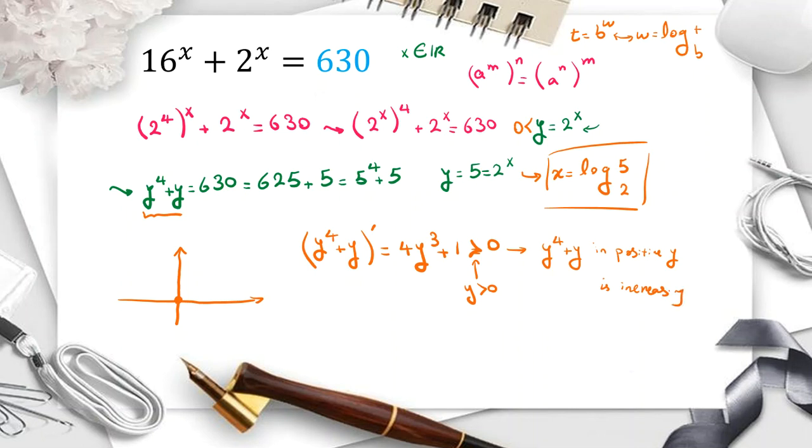So when a function is increasing, in 5 it is 630. So after y, it is greater than 630. Before y, it is less than 630. So our only answer for x is log 2 of 5.